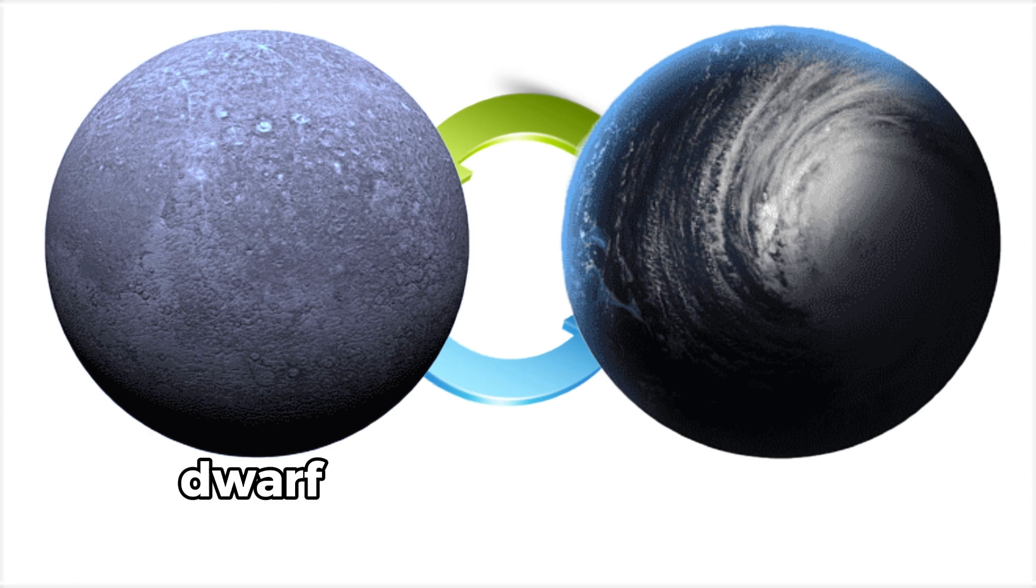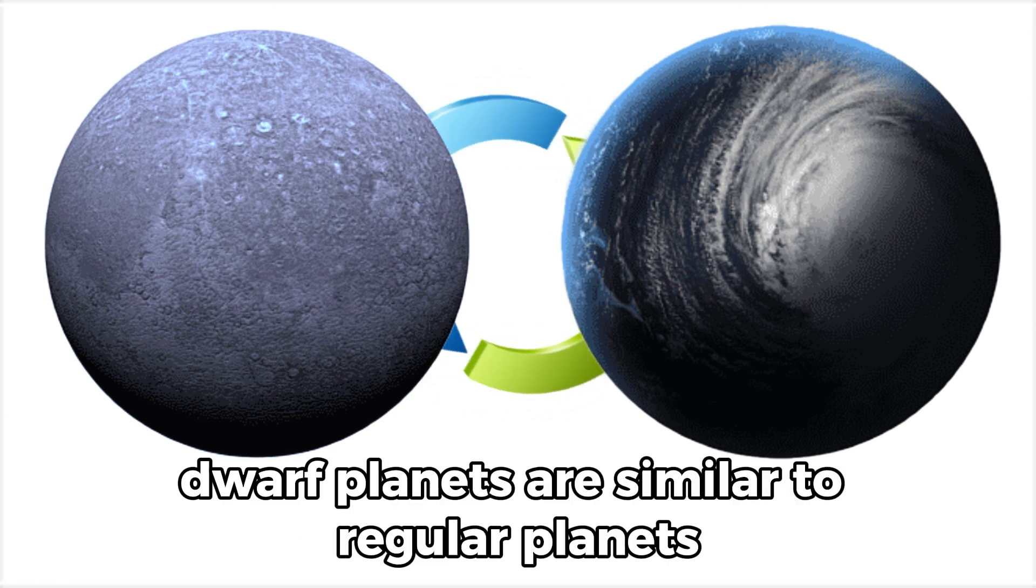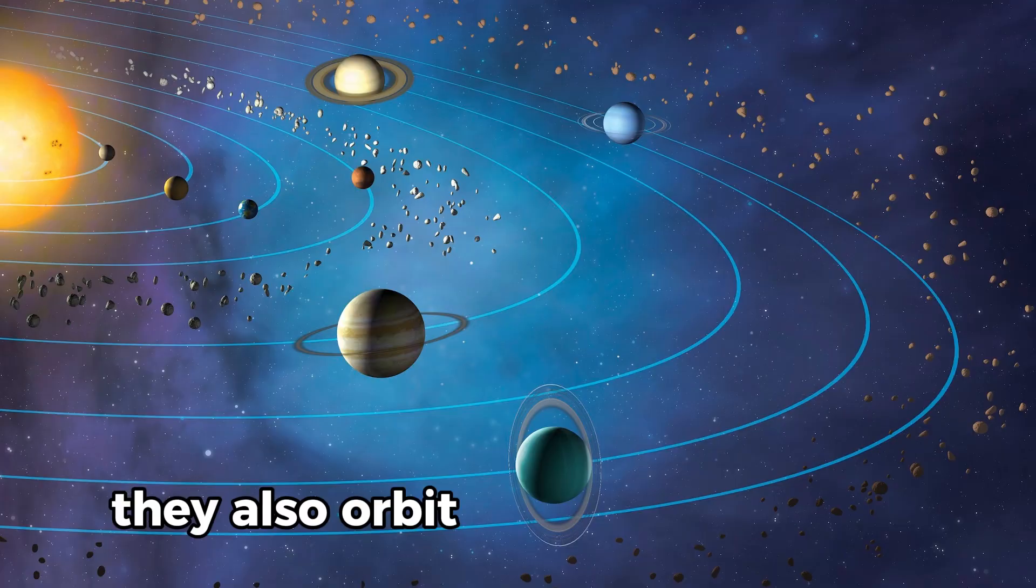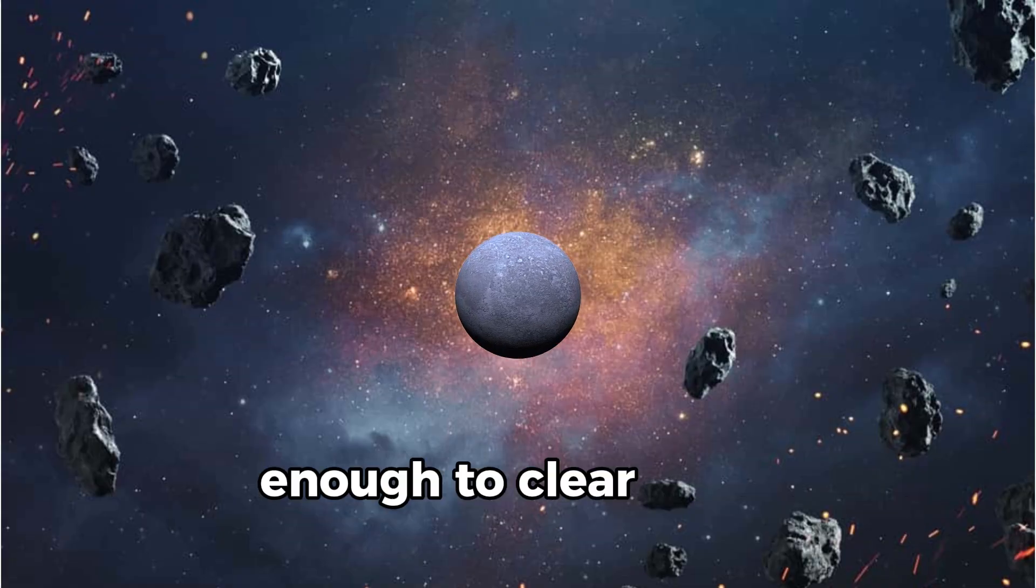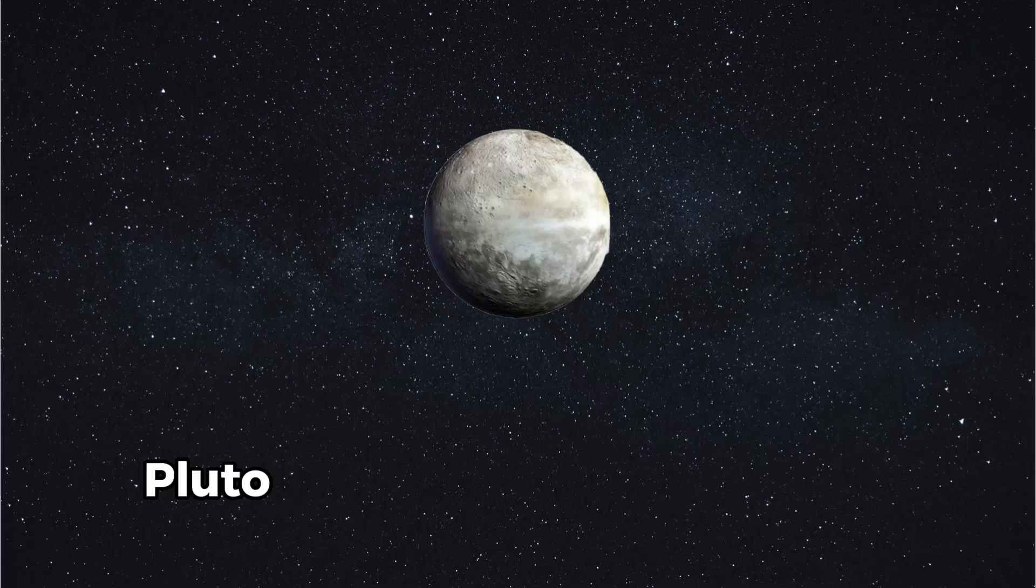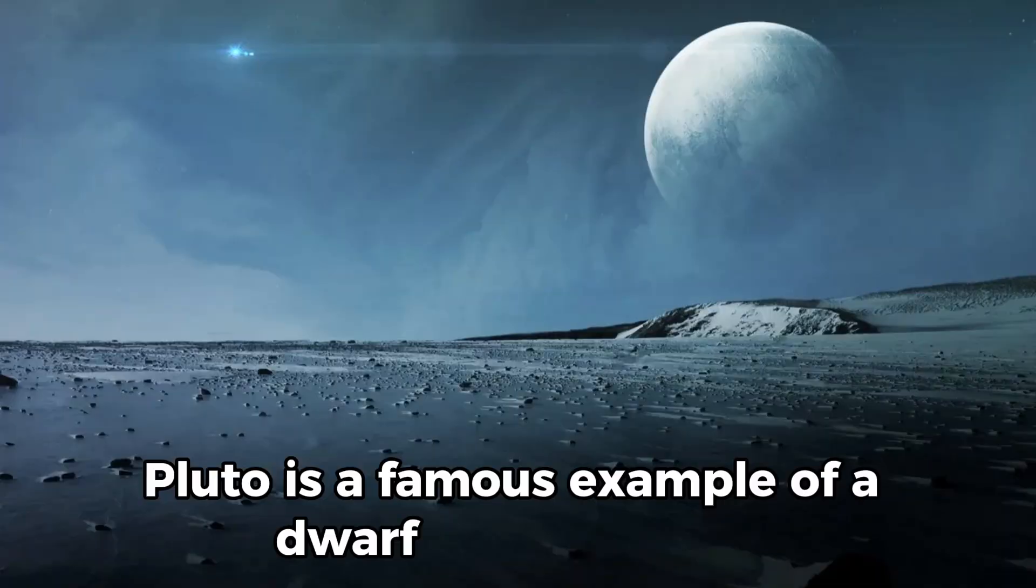Dwarf planets are similar to regular planets but they are smaller in size. They also orbit stars but aren't big enough to clear their neighborhood of space debris. Pluto is a famous example of a dwarf planet.